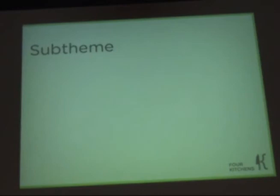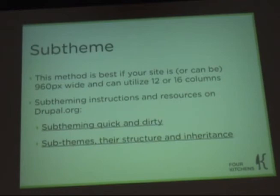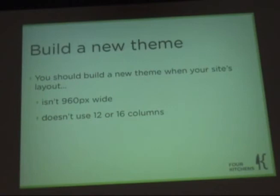This method is most efficient if you're using 12 or 16 columns because it's already defined in 960. Sub-theming quick and dirty — this is on Drupal.org. If you want to build a new theme and your site layout is not 960 pixels wide and doesn't use 12 or 16 columns, you probably don't simply want to sub-theme because you're going to wind up overriding more CSS than you would have written in the first place. Just copy-paste, create a new theme, change the values.